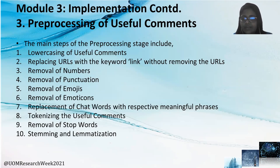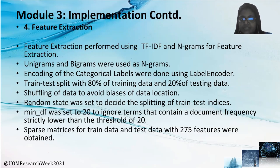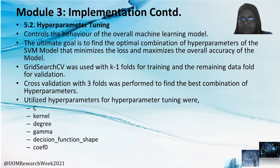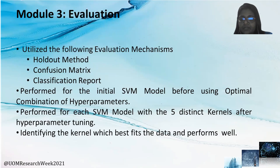The following steps were done under the pre-processing stage. Feature extraction was performed using TF-IDF and N-grams. Unigrams and bigrams were used as N-grams. Initially, the model was trained without parameters and hyperparameters. Hyperparameter tuning was done to identify the best combination of hyperparameters. Confusion metrics and classification report were utilized under the evaluation mechanism, performed for the initial SVM model and an SVM model with five distinct kernels after hyperparameter tuning.